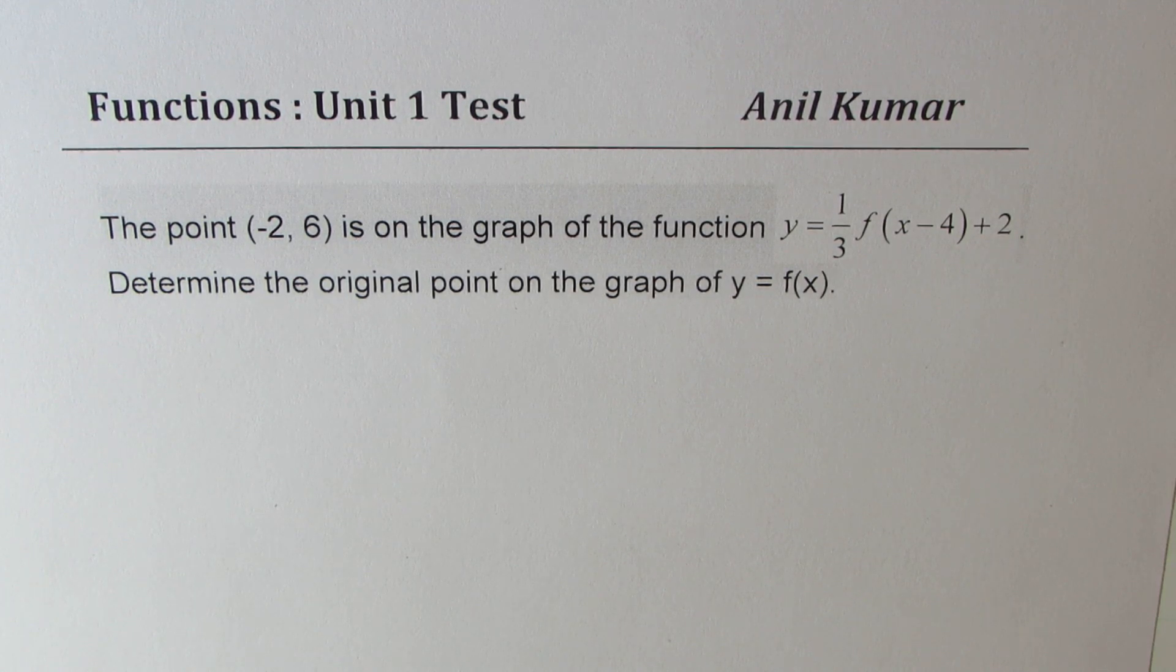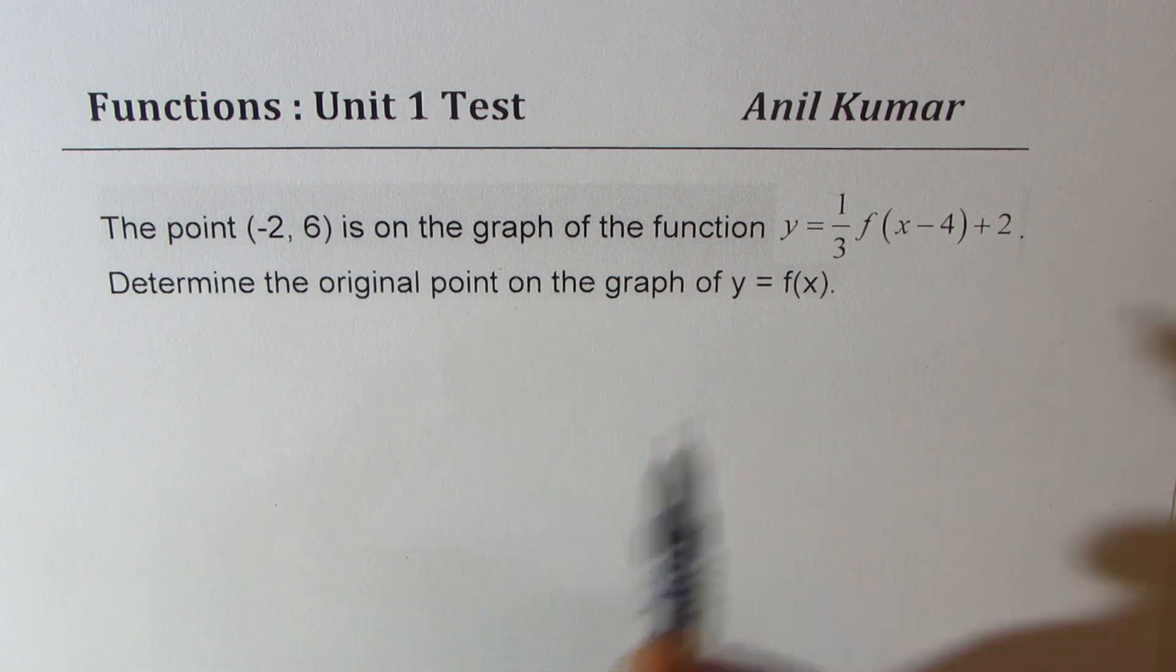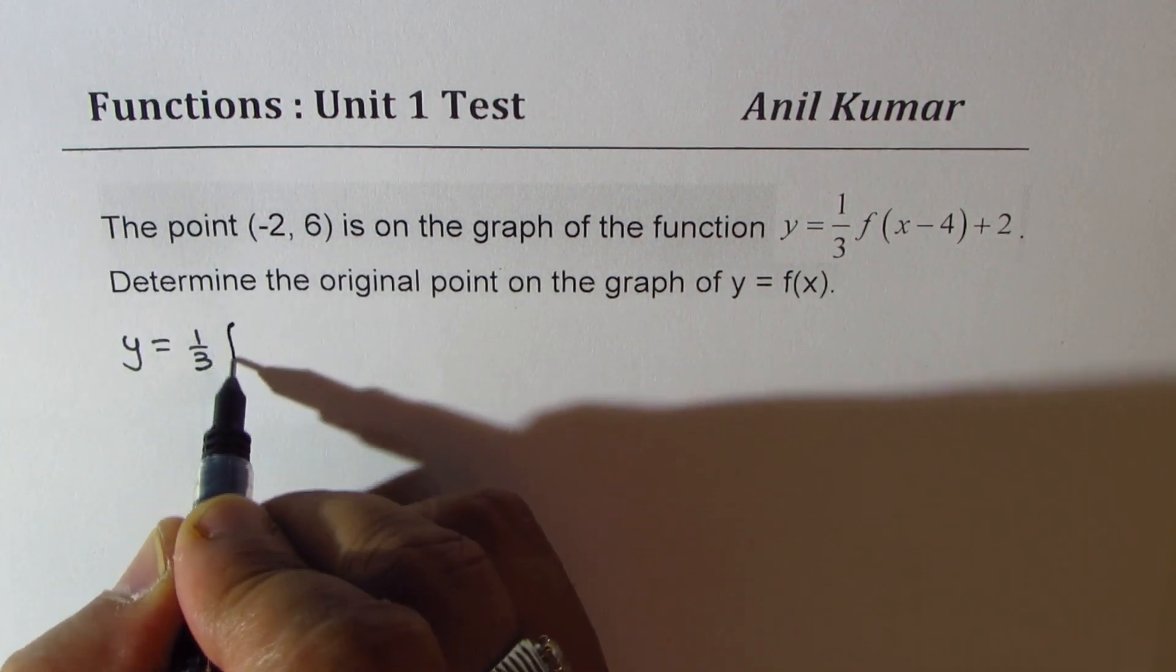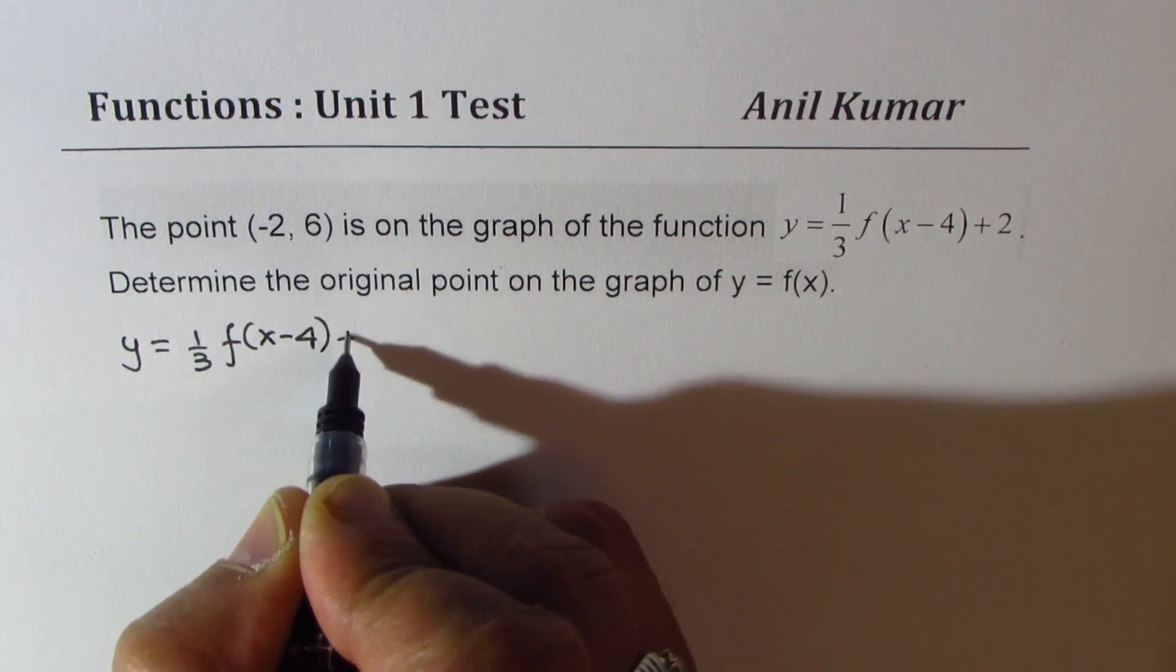The point (-2, 6) is on the graph of the function y equals—let me write—y equals 1/3 f(x - 4) + 2.